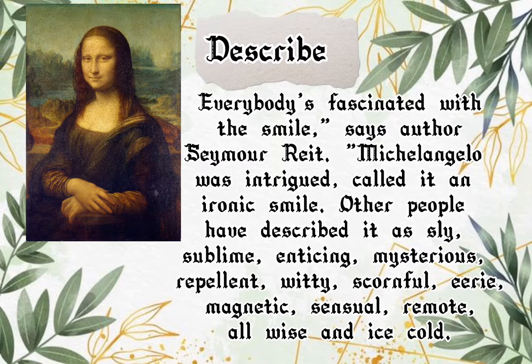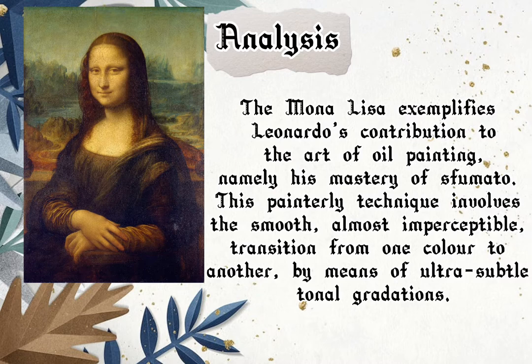The Mona Lisa exemplifies Leonardo's contribution to the art of oil painting, namely his mastery of Sfumato. This painterly technique involves the smooth, almost imperceptible transition from one color to another by means of ultra-subtle tonal gradations.